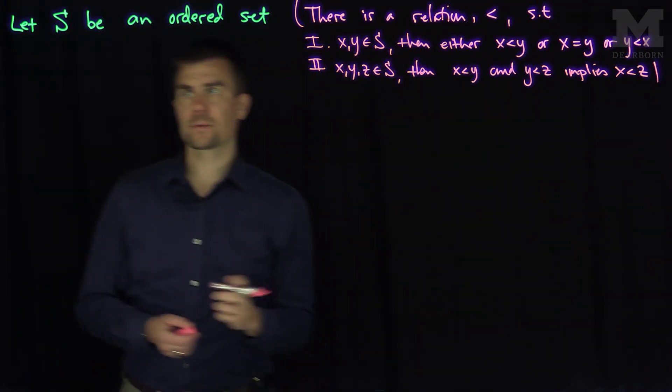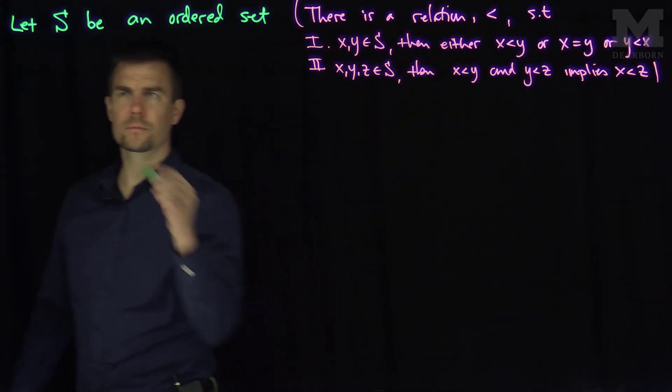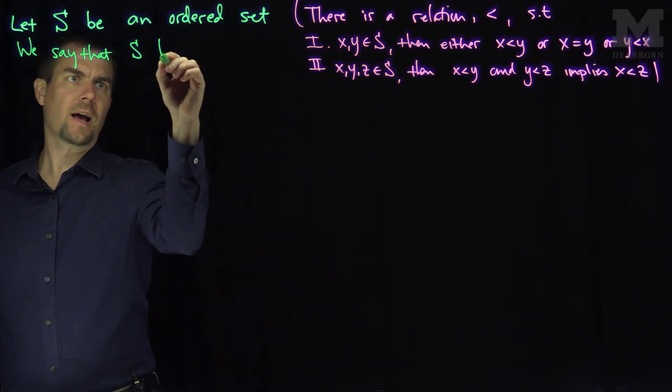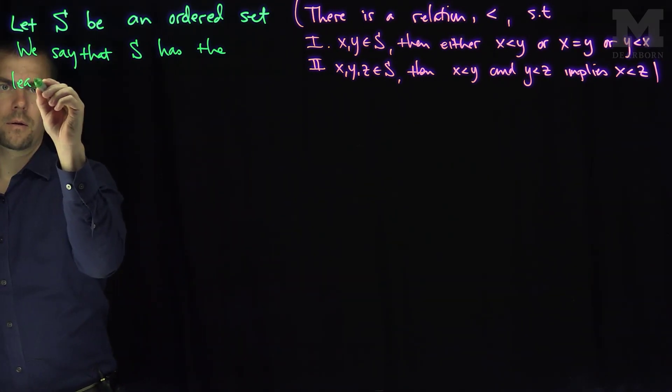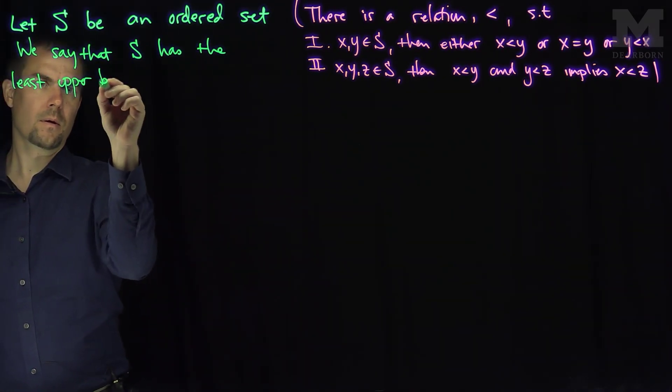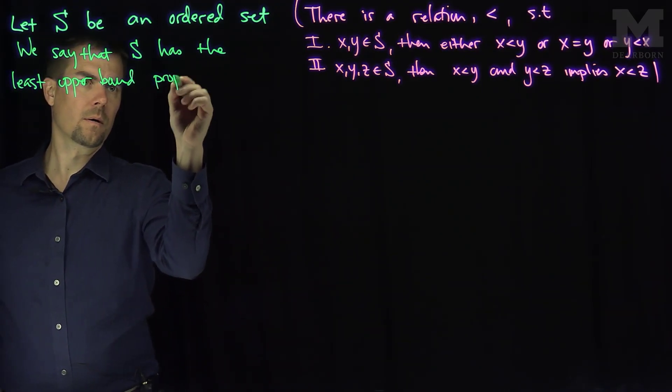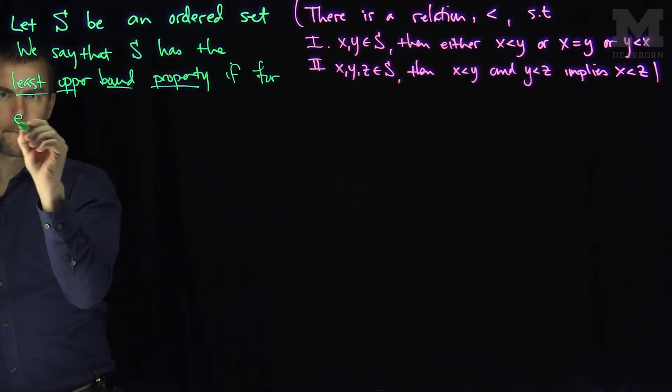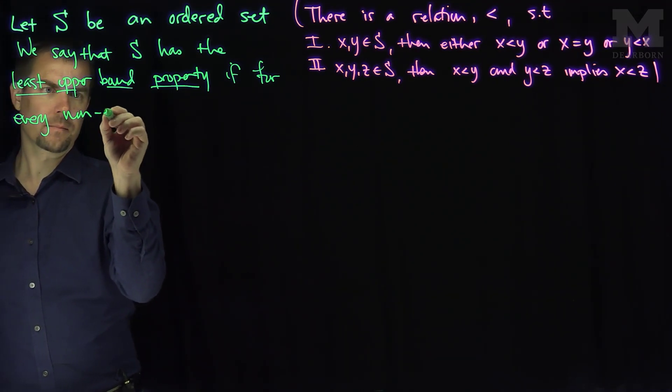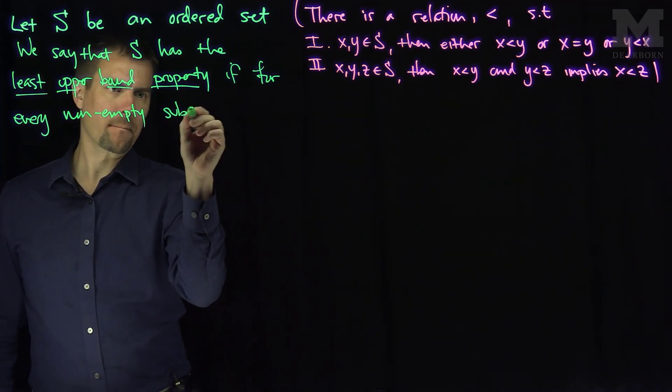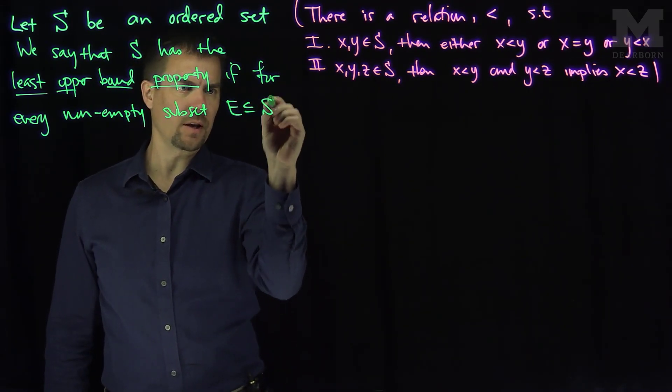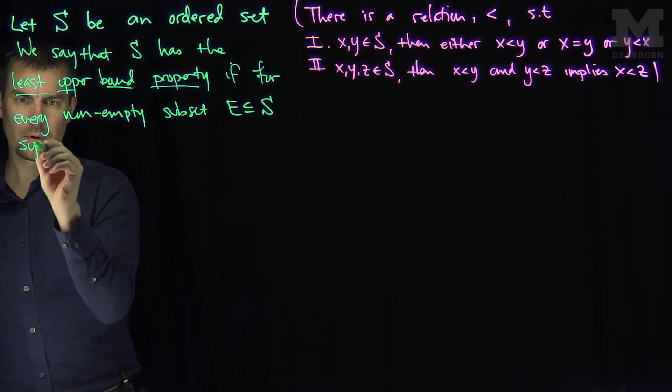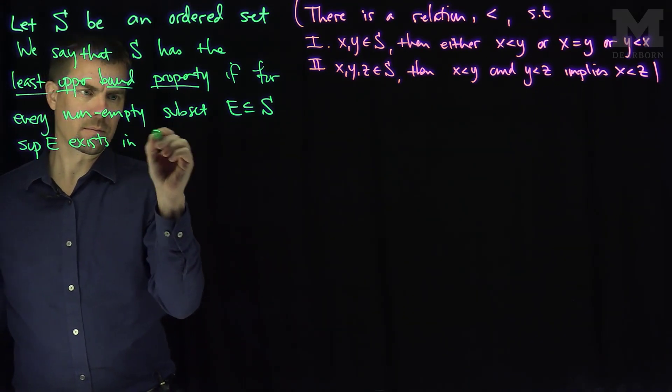We say that S has the least upper bound property if, for every non-empty subset E, so if I have a non-empty subset E of S, the supremum of E exists in S.